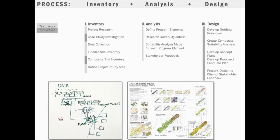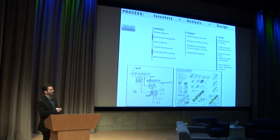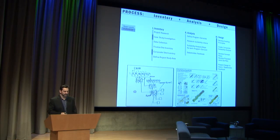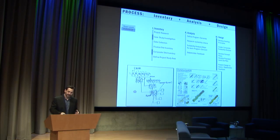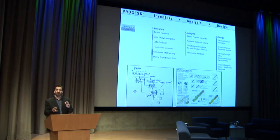Here's our process, diagrammed on our studio whiteboard and then more artistically rendered by one of the students at the end of the project. You can see the geodesign framework integrating and iterating throughout. We broke it into three broad categories: inventory, analysis, and design. The structure included both teamwork and individual work. Throughout this process we emphasized collaboration, but also kept in mind our instructional goal of having each student experience every aspect.